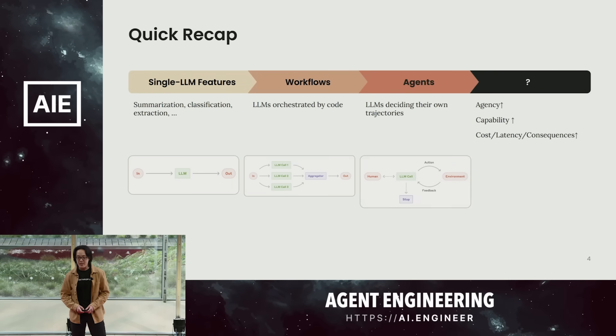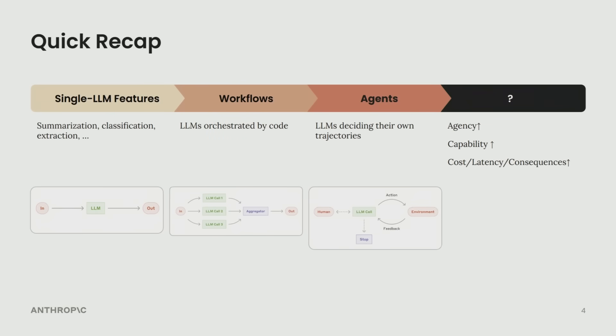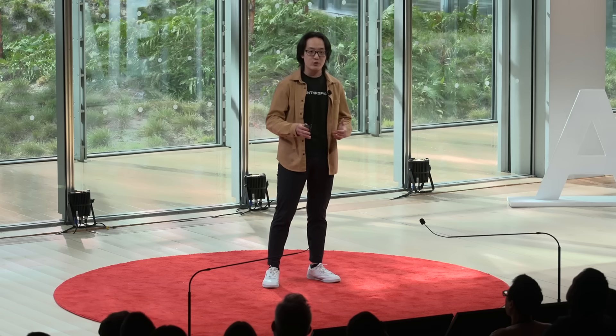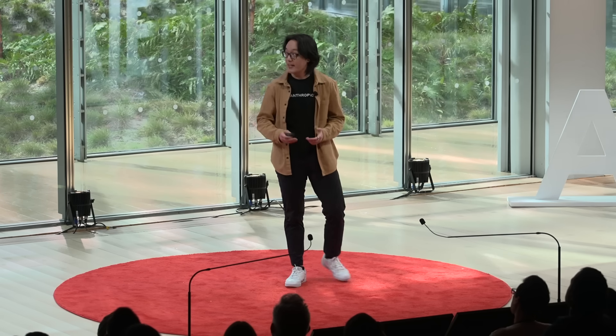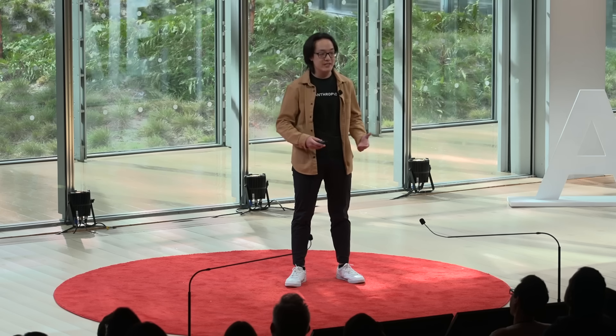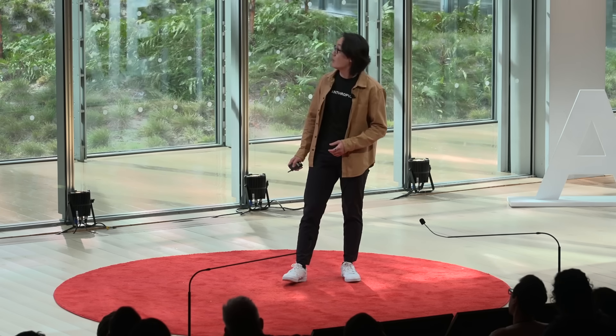Let's first start with a recap of how we got here. Most of us probably started building very simple features — things like summarization, classification, extraction — just really simple things that felt like magic two to three years ago and have now become table stakes. Then, as we got more sophisticated and as products matured, we got more creative. One model call often wasn't enough, so we started orchestrating multiple model calls in predefined control flows. This gave us a way to trade off cost and latency for better performance, and we called these workflows.